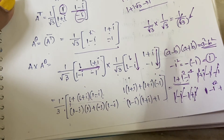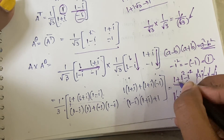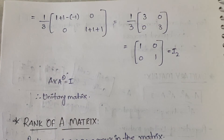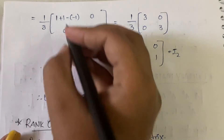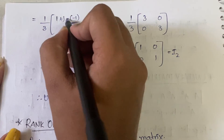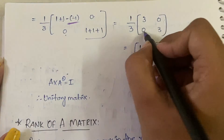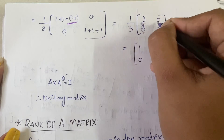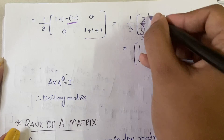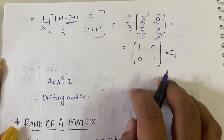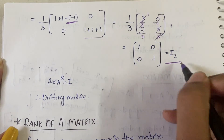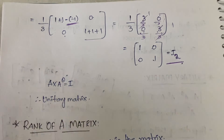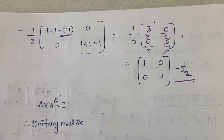So we get (1/3) · [[3, 0], [0, 3]]. Dividing each element by 3 gives [[1, 0], [0, 1]], which is the 2×2 identity matrix I₂. Since A·Aθ = I, it is proved that the given matrix is a unitary matrix.